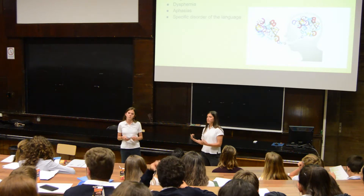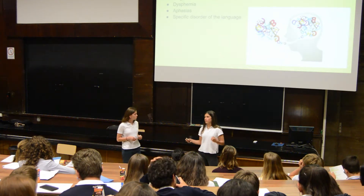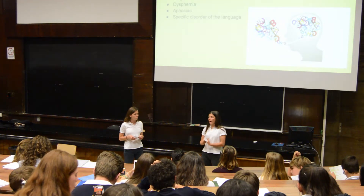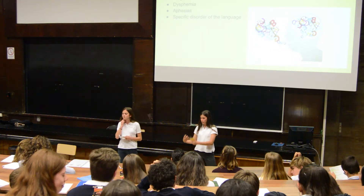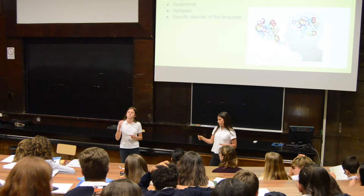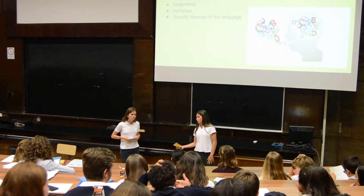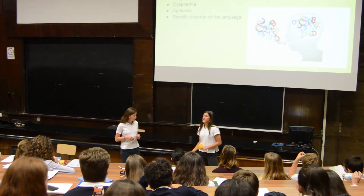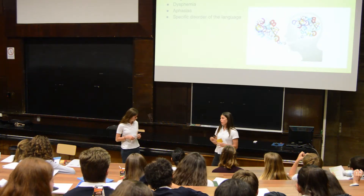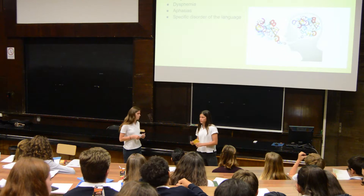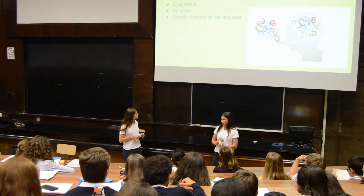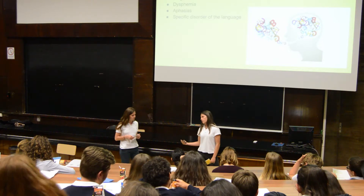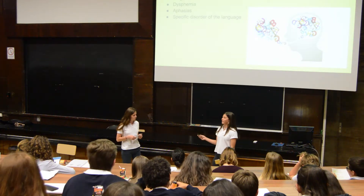It is not only developed by children; it can be developed by adults because it causes injuries that are associated with the brain. This is associated in another way with language. The last one is the specific disorder of language, which is a mixture of all these types of disorders, so a person can have many disorders at the same time.